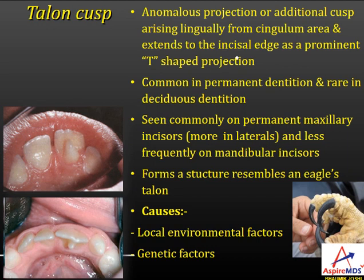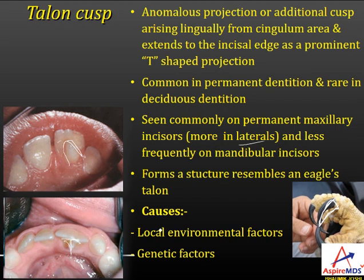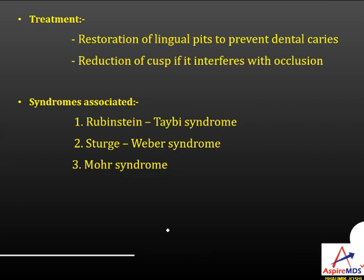Talon's cusp is an anomalous projection or additional cusp located lingually on the cingulum area, forming a T-shaped projection. It is common in permanent dentition, mostly in permanent maxillary lateral incisors and less frequently in mandibular incisors. Because it resembles an eagle's talon, it is called talon's cusp. Causes include local environmental and genetic factors. The cusp may or may not contain pulp tissue. If pulp is exposed following trauma, root canal treatment is required. Restoration of lingual pits prevents caries, and reduction of the cusp may be needed if it interferes with occlusion.